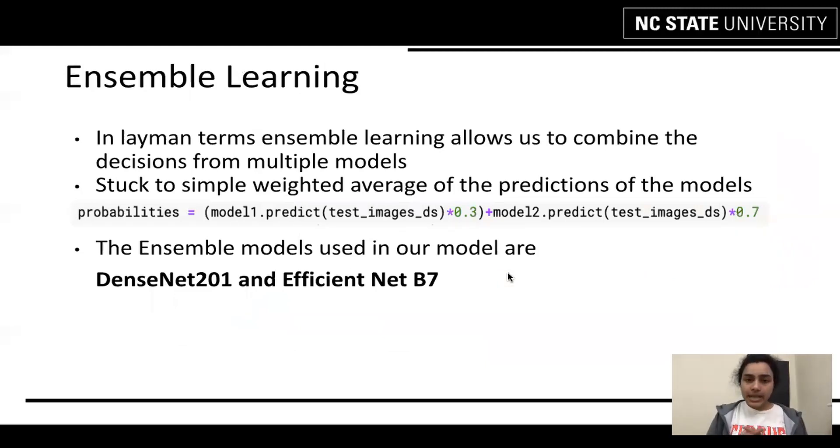Ensemble learning. In previous terms, ensemble learning usually allows us to combine decisions from multiple models. So basically, you have two different types of models and their predictions, and you try to make a decision by looking at the predictions of both those models. Usually, the most basic types of using ensemble learning are you try to find the mode of the class that is being predicted. So the more the number of classes being predicted, you might choose that. In some cases, you might just take an average of all the predictions. And in our case, we have used a weighted average of those predictions, like 0.3 was a weighted average for the predictions of DenseNet, whereas 0.7 was a weighted average for EfficientNet B7. There are other methods such as bagging and boosting, which we haven't tried yet.